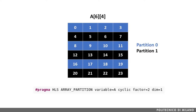If we apply cyclic partitioning on the first dimension — the row dimension — with a factor of 2, we are basically storing the odd rows into one partition and the even rows into another partition. As you can see, within the HLS array partitioning directive we use the DIM parameter to specify which dimension to partition.